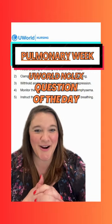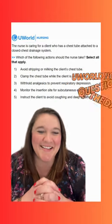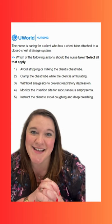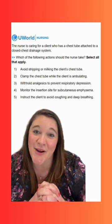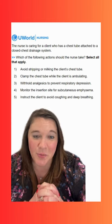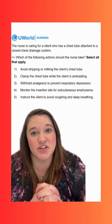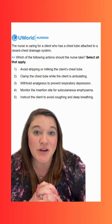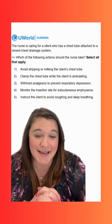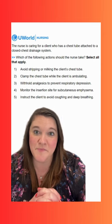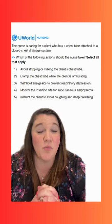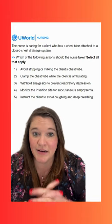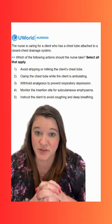Hey y'all! Welcome back for another pulmonary NCLEX question of the day. Our question today says the nurse is caring for a client who has a chest tube attached to a closed chest drainage system. Which of the following actions should the nurse take? Select all that apply. So we are going to have multiple correct options here and we are looking for something that would be indicated for our clients with a chest tube.